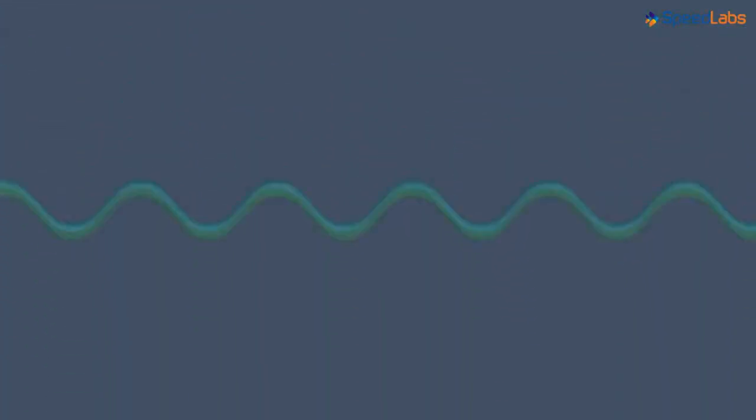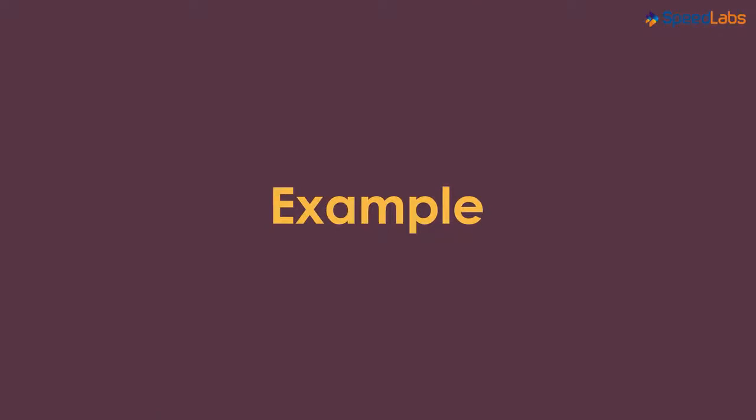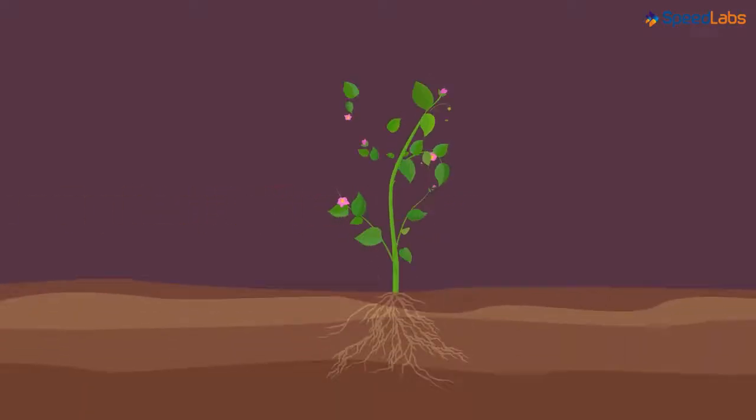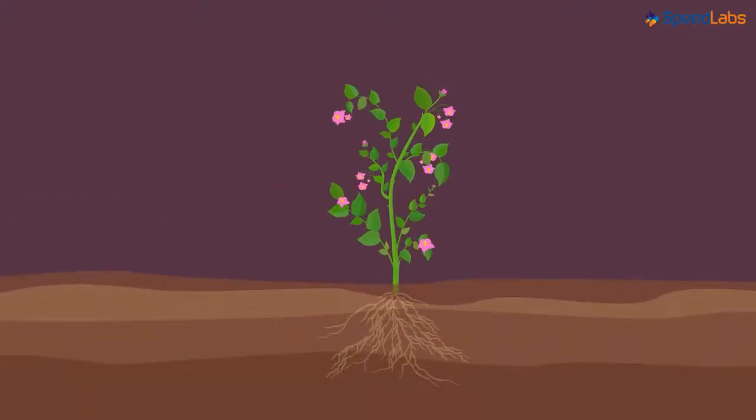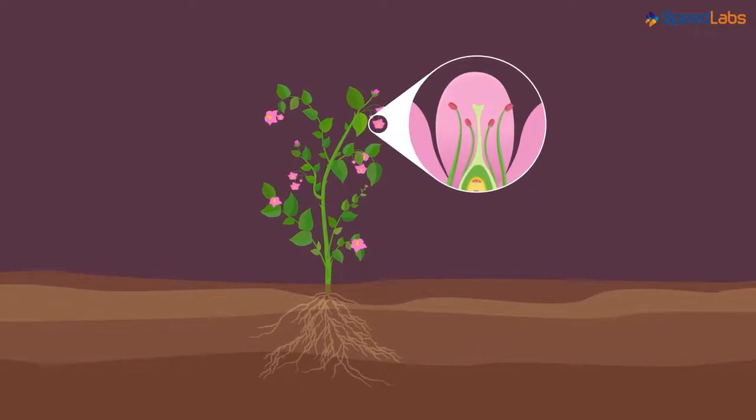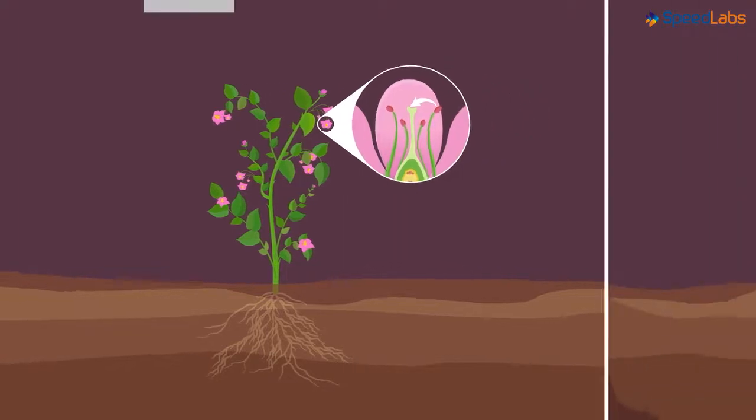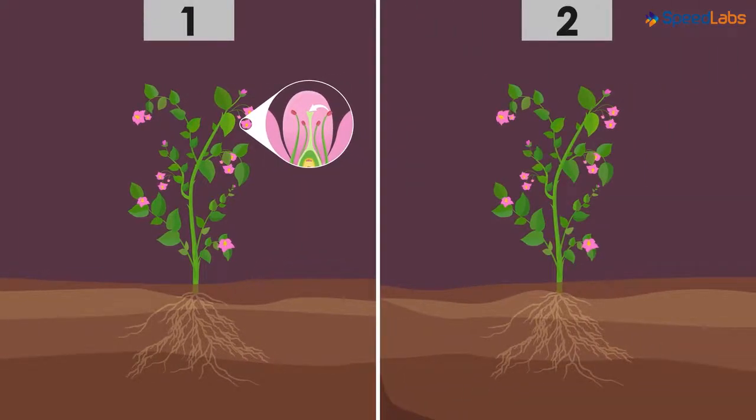Let's understand the types using an example. Let's take a single plant which has these beautiful flowers. Now imagine one case where the pollen grains from this flower are transferred to the stigma of the same flower. The second case is where the pollen grains from this flower are transferred to the stigma of another flower, say this flower belonging to the same plant.